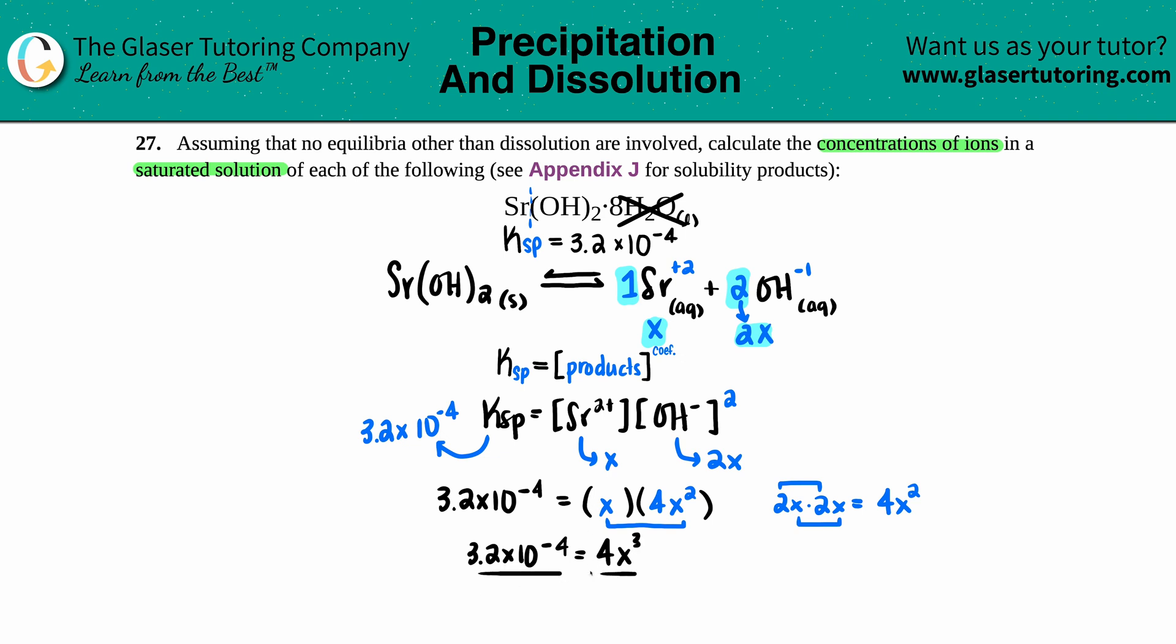3.2 times 10 to the negative fourth equals 4x cubed. And now let's just solve for x. Divide on both sides by 4 in the beginning. Let's just do that: 3.2 times 10 to the negative fourth divided by 4.